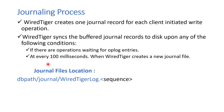The location of the journal file is: dbpath/journal/WiredTigerLog dot sequence-number. The sequence number starts from nine zeros and then increments — one, two, three, and so on.